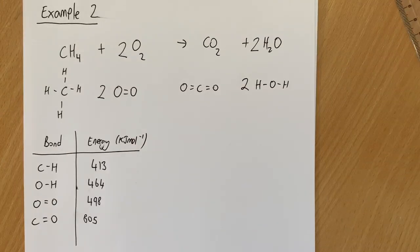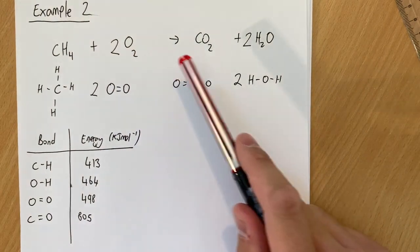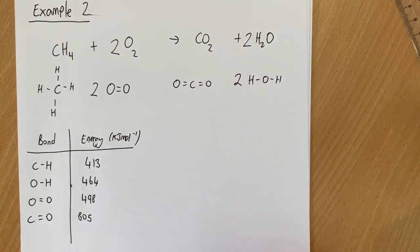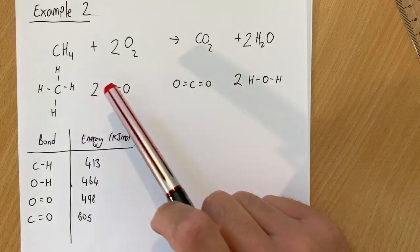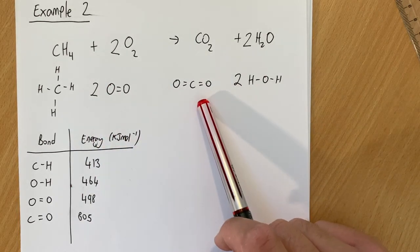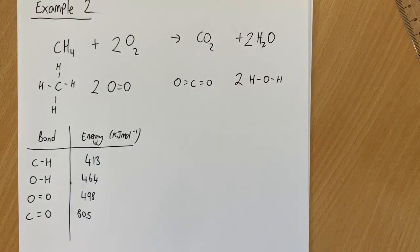Okay so here's our second example. In this example we can see that we've got methane and oxygen reacting to make carbon dioxide and water. I've drawn out here what they look like. So CH4, oxygen, carbon dioxide and H2O.